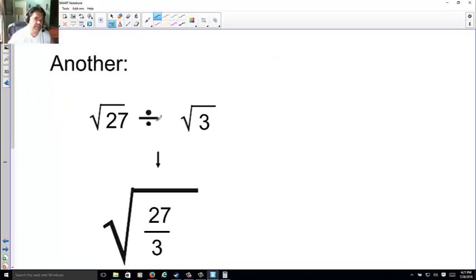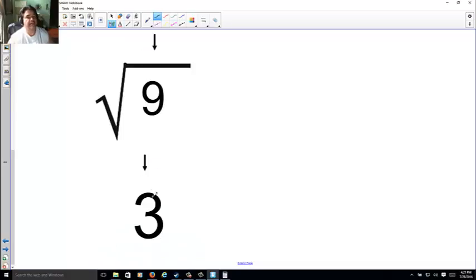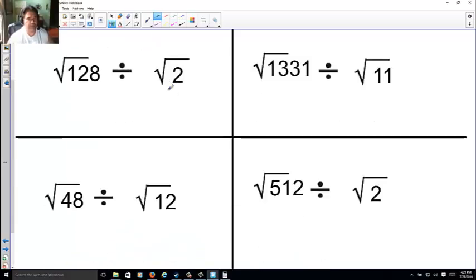Another one. Square root of 27 divided by square root of 3. Just put square root, big square root, 27 over 3. 27 divided by 3 is 9. And the root of 9 is 3. You try.